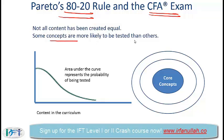Some concepts are much more likely to be tested than others. For example, the capital asset pricing model, the Gordon growth model, or hypothesis testing for the mean of a population — these are core concepts that are very likely to be tested, and it is my belief that these core concepts represent approximately 20% of everything in the curriculum.